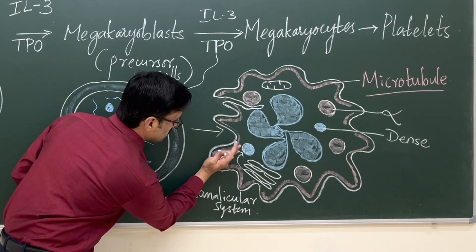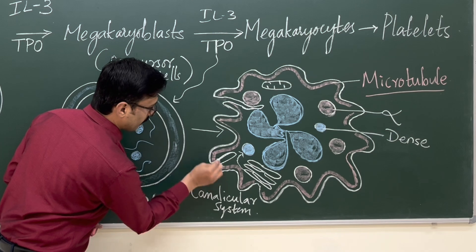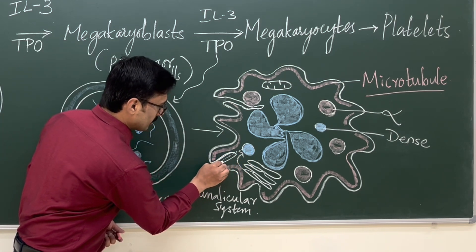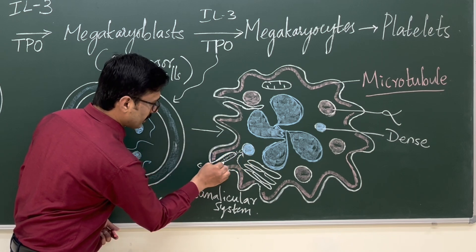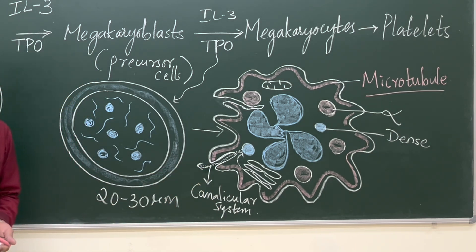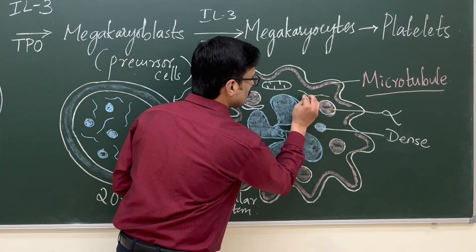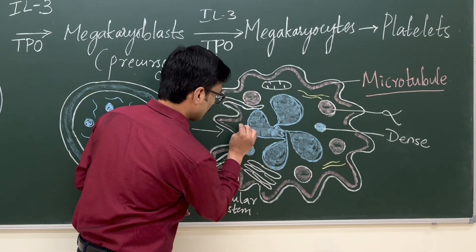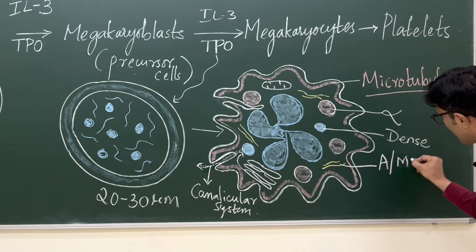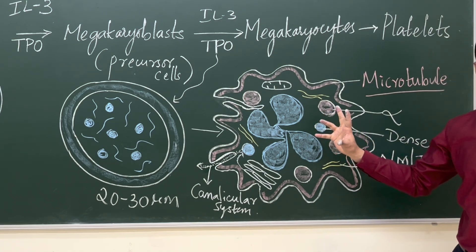The canalicular system consists of invaginations of the cell membrane into the cell. Through this canalicular system, granules release their chemical substances to the exterior. Megakaryocytes also develop contractile proteins made up of actin, myosin, and thrombostanin, which have a role in contraction of the cells.